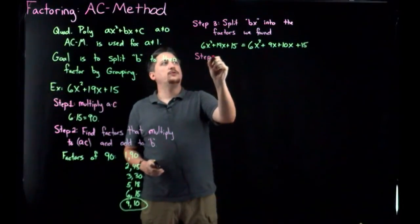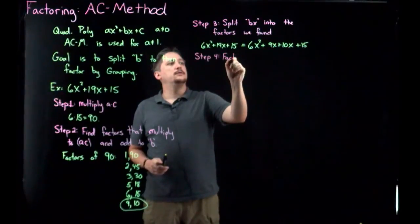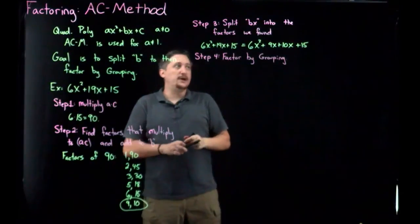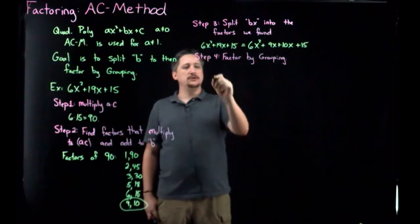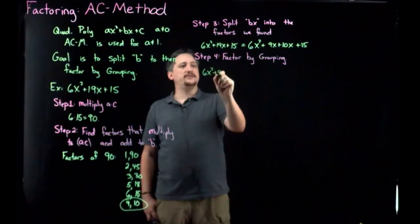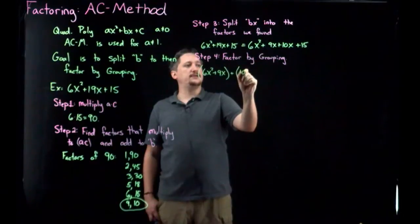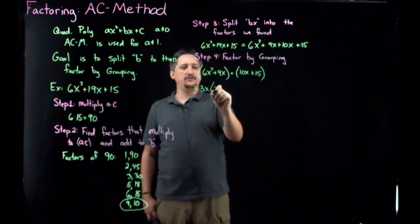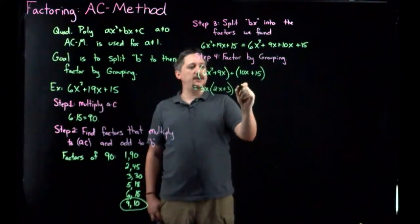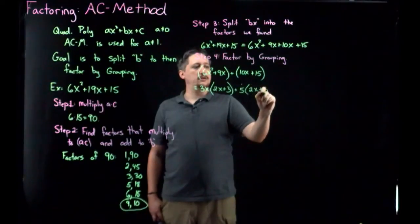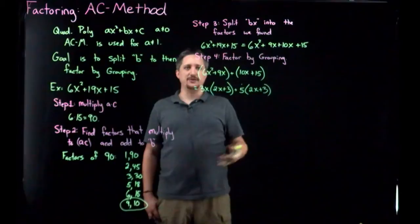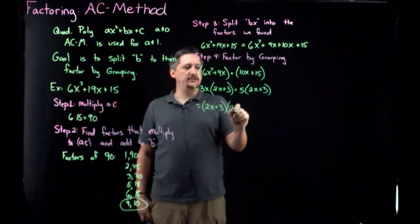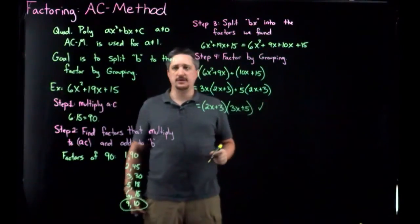Step four: factor by grouping. I'll group the first two terms and the last two terms: (6x² + 9x) + (10x + 15). From the first group I pull out 3x, giving me 3x(2x + 3). From the second group I pull out 5, giving me 5(2x + 3). They match, which means I can factor out (2x + 3), leaving me with (2x + 3)(3x + 5). And that's the AC method.